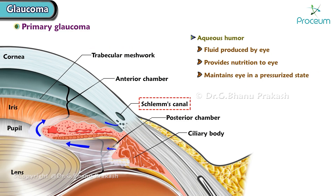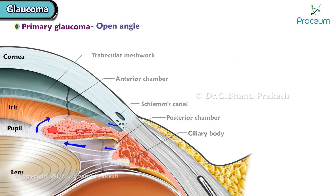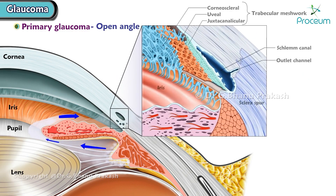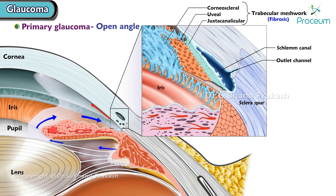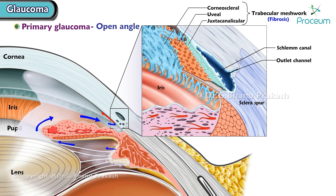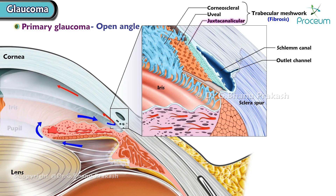In open angle glaucoma, fibrosis of the trabecular meshwork occurs, leading to blockade. Maximum resistance is offered by the juxtacanalicular meshwork.